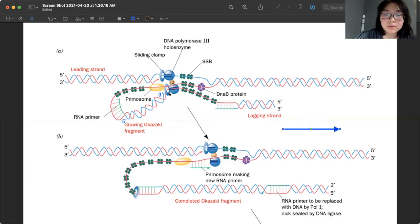And so as it's synthesizing, more and more DNA five prime to three prime, this loop will keep getting bigger, right? Because you're making it longer. And eventually, it will hit this old RNA primer.